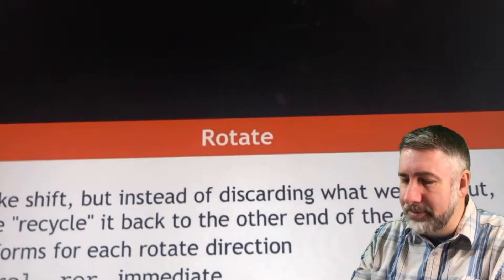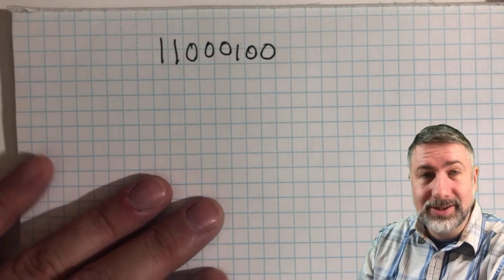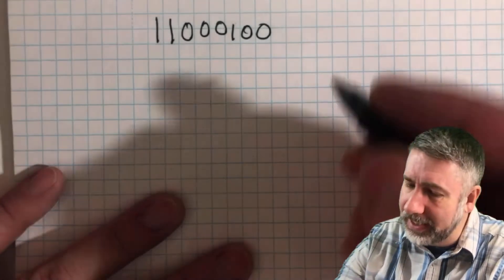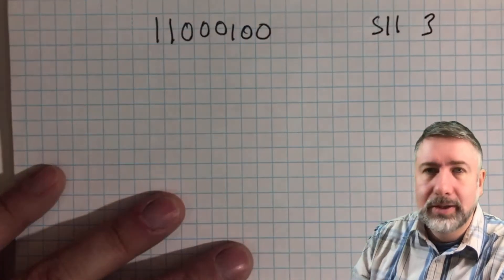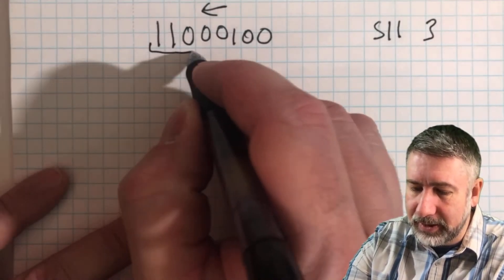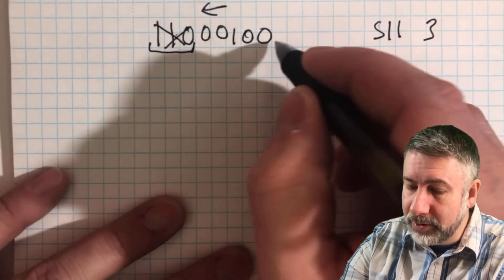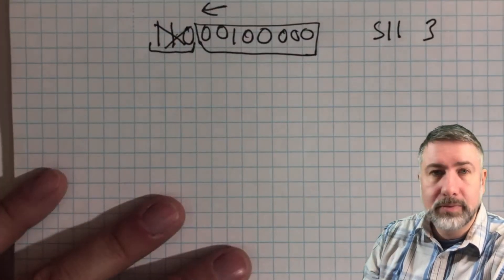Let's look at an example on paper. Here's an example of a rotate. Let's take an eight-bit number and rotate it instead of shifting it. Normally if we were to do a shift left logical by three, we'd shift it to the left, throw these three bits away, and put zeros in instead. That would be our new result.